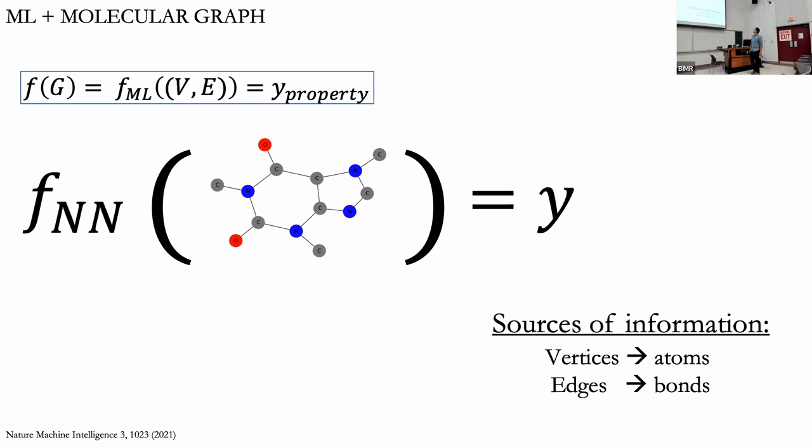That's all we know even from the chemistry perspective. If I show you the connectivity of a molecular representation, you can infer properties: is it basic? Is it polar? A graph neural network framework can leverage exactly this kind of structural information.